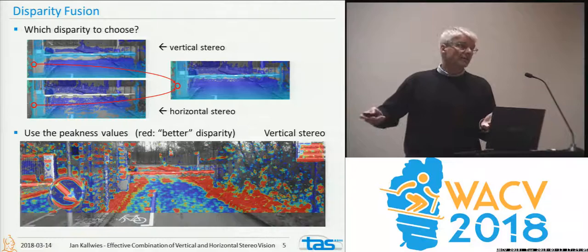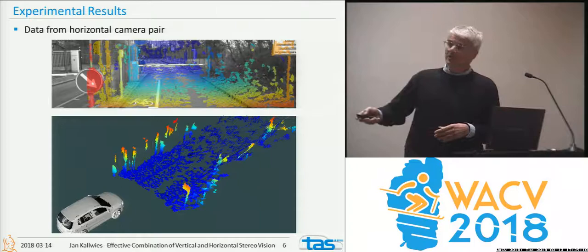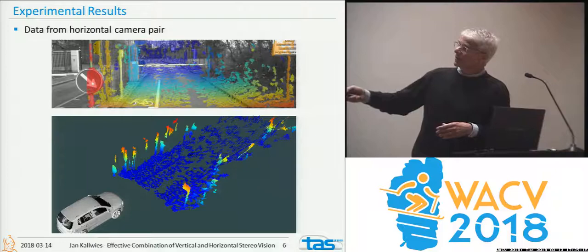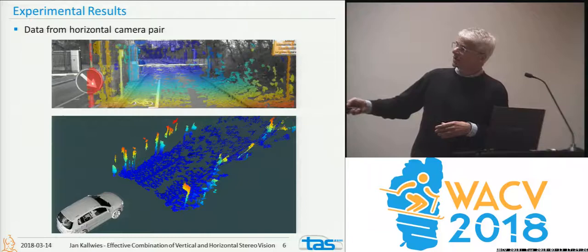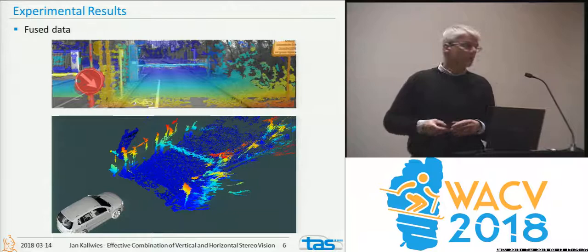Here you see a point cloud from the horizontal camera pair, where you obviously don't see the boom. In the vertical stereo, you see that boom barrier very well. The vertical structures are well captured in the horizontal pair, and the horizontal structures in the vertical camera pair. This is how they look when fused — you get a nice combined image. That's it. See you at the poster.